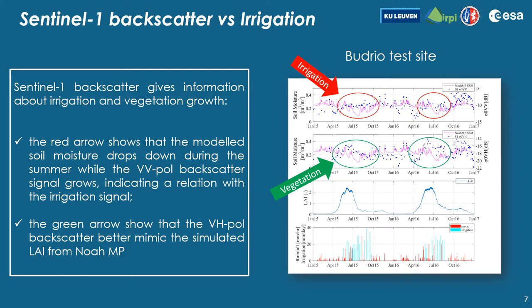Additionally, we compared Sentinel-1 backscatter against irrigation data — here is an example for the Bodrio site. Backscatter observations in both VV and VH polarization are compared with simulated soil moisture, leaf area index is reported in the third plot, and irrigation data in the bottom plot. The red arrow shows that during summer, when soil moisture drops, the VV backscatter signal grows, indicating a relation with the irrigation signal. The green arrow shows that the VH signal better mimics the simulated leaf area index.